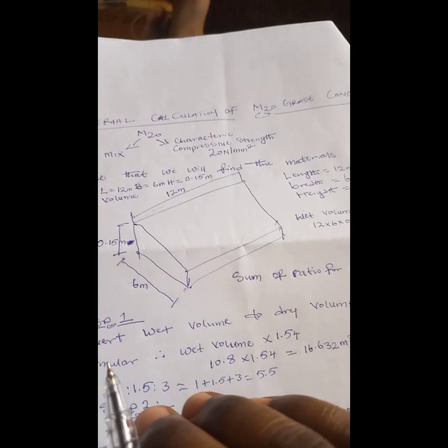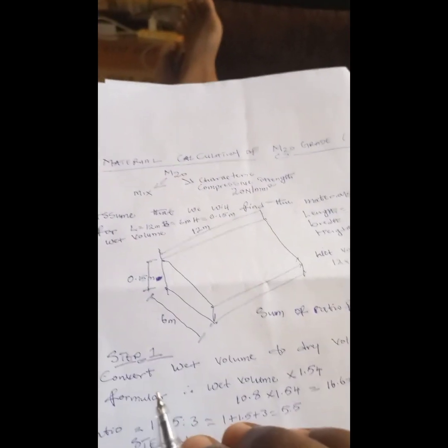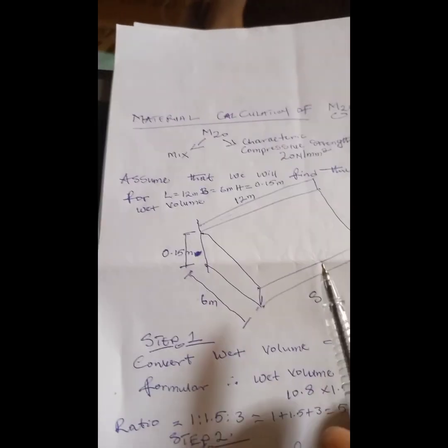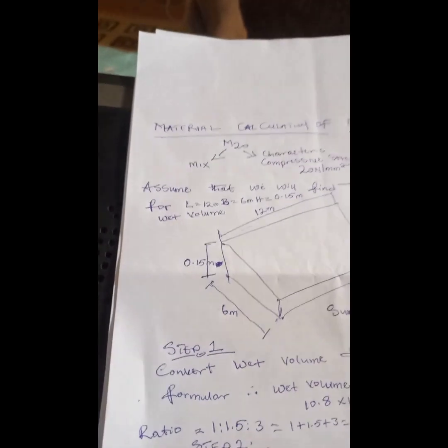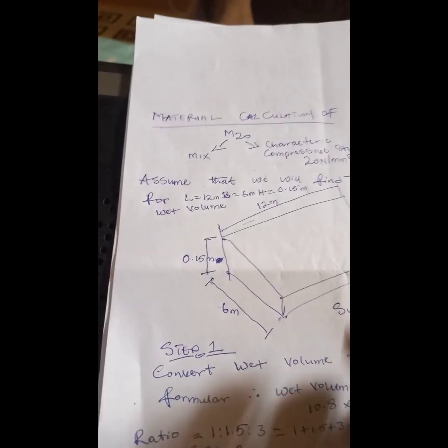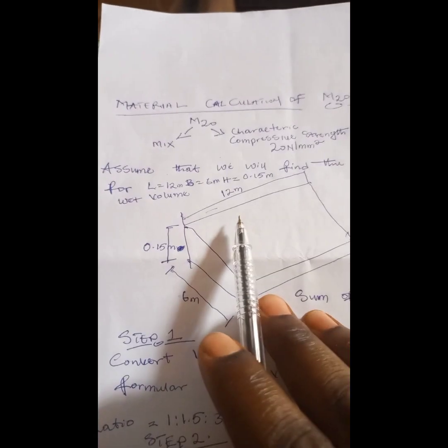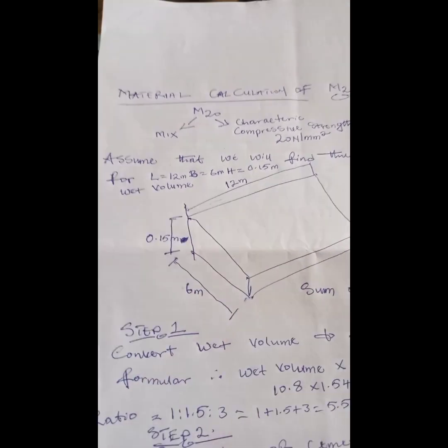This material calculation is for a particular slab with a length of 12 meters, breadth of 6 meters, and a thickness of 0.15 meters, as you can see here.